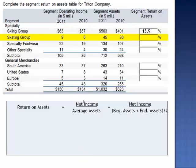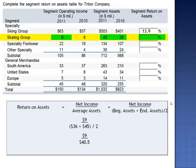For the skating group, net income is $9 million. We divide by beginning assets, $36 million, plus ending assets, $45 million, and dividing by two. $9 million divided by $40.5 million is 22.2%.